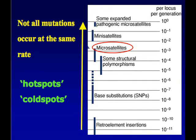One of the reasons we like Y-STRs is because they have a relatively high mutation rate, about in the range of 10 to the minus 3. That means about one in every thousand meioses there's going to be a mutation — a change in the number of repeats from father to son on average. It's going to vary from locus to locus, but across all the loci we're interested in it's going to be about that range. For forensic markers, this high mutation rate contributes to a lot more variability.